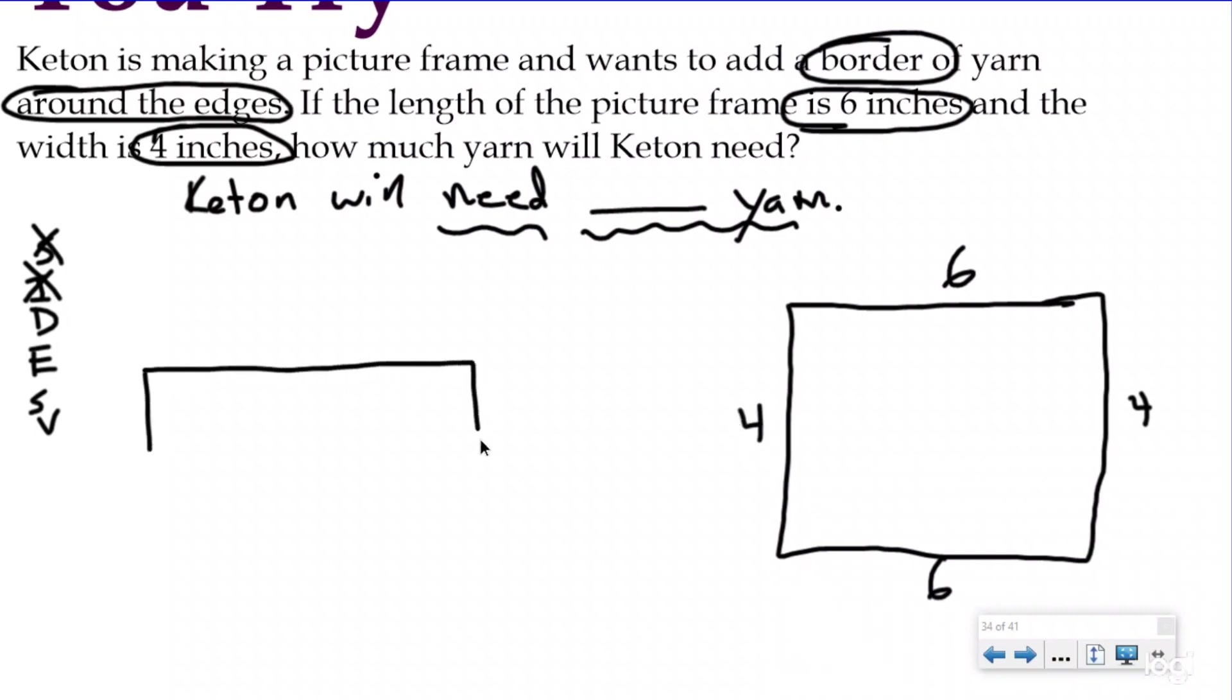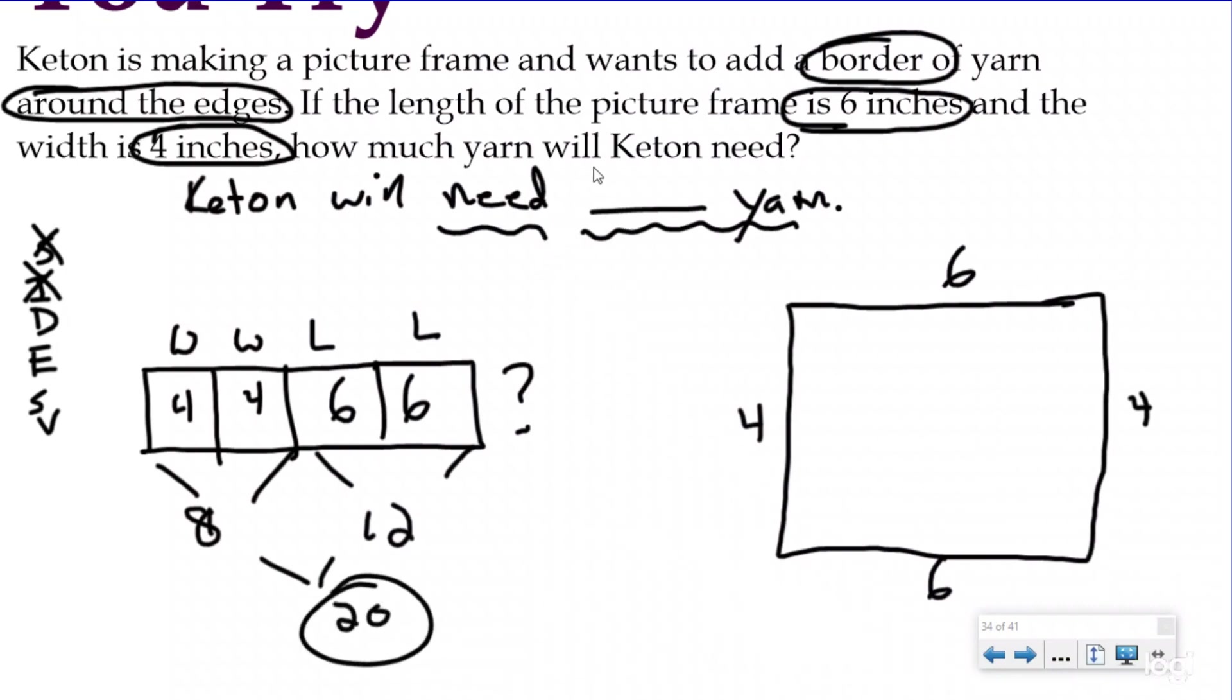Then I'm just going to put it into my part-whole model. I know I'm looking for how much yarn Keaton will need. So I'm looking for the perimeter, which is going to be my total. So I have two groups of 4 and then I had two sides that were both 6. I have my width, my width, my length, and my length. I need to add up all of the edges. When I do that, I get 4 plus 4 is 8. 6 plus 6 is 12. When I add those together, I'm going to get 20 inches. So she will need 20 inches of yarn.